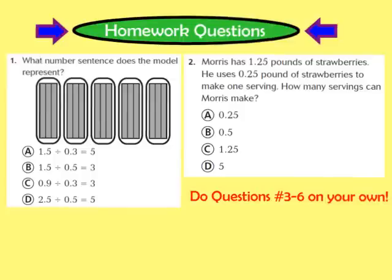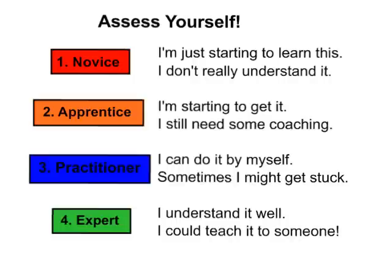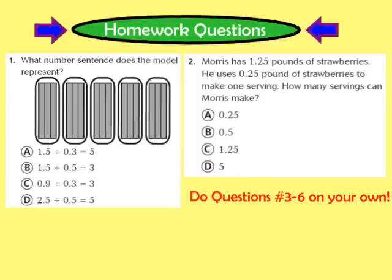Your homework for tonight is to complete question number 1 and question number 2, as well as numbers 3 through 6, found on page 110 in your GoMath workbook. Don't forget to assess yourself — do you feel like you're a 1 (novice), 2 (apprentice), 3 (practitioner), or 4 (expert)? Write your number somewhere on your workbook page. We hope you have a great evening and look forward to seeing you in class tomorrow.